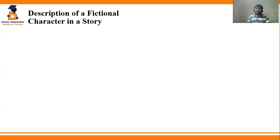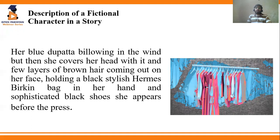In this way we can come up with different character descriptions — open the cupboard, find different clothes, give different descriptions, create our own fictional character, and name that character. Another advanced level example: 'Her blue dupatta blowing in the wind, she covers her head with it, a few layers of brown hair coming out on her face, holding a black stylish handbag, and sophisticated black shoes — she appears before the press.' Simple vocabulary, focusing on shape, color, and size, and you can create and name your fictional character.